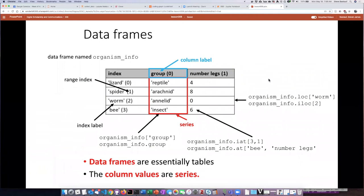Here's what we have seen so far. A data frame essentially is like a table. Each column in the table is basically a series.